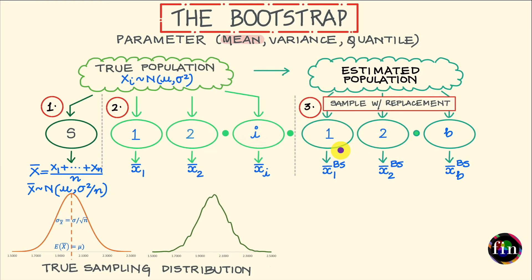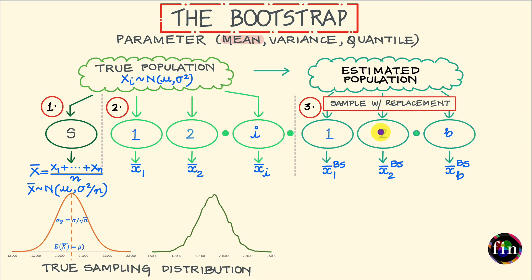Once you have your resample, use your chosen estimator to arrive at an estimate of your chosen population parameter based on this resample. This estimate from the first resample is denoted x1-bar with a superscript 'bs', indicating it comes from a bootstrap sample. Now repeat this procedure again and again — generate many many resamples and for each resample work out an estimate of your chosen population parameter. Eventually you will have a bootstrapped sample of many different estimates of your chosen population parameter — in this case, the population mean.